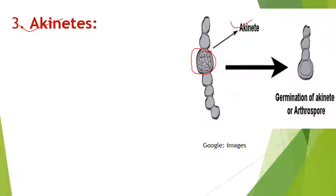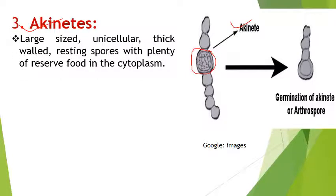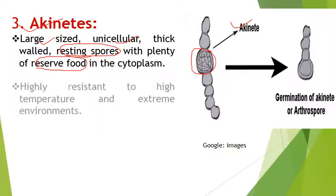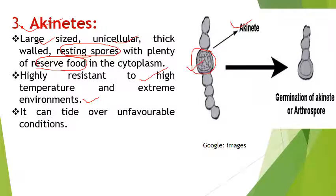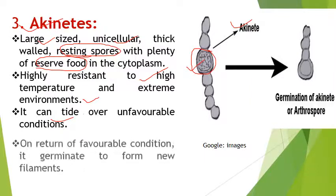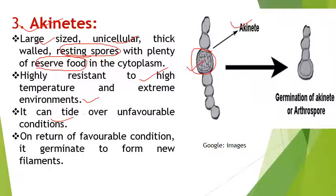Akinetes are large-sized unicells or thick-walled resting spores in which there is a lot of reserve food material. They are resistant to high temperature and extreme environmental conditions — extreme cold, extreme heat, and extreme dryness. All harsh conditions can be survived by this structure, so it can tide over unfavorable conditions. As conditions become favorable, it will activate itself and germinate to form a new filament.